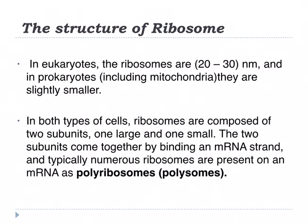What is the structure of ribosomes? In eukaryotes, the ribosomes are 20 to 30 nanometers, and in prokaryotes, including mitochondria, they are slightly smaller. In both types of cells, ribosomes are composed of two subunits: one large and one small. The two subunits come together by binding an mRNA. Typically, numerous ribosomes are present on a messenger RNA as polyribosomes, sometimes called polysomes.